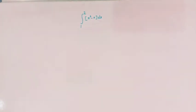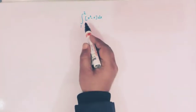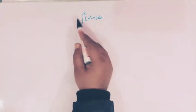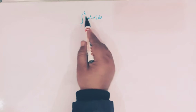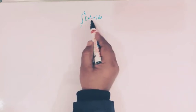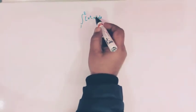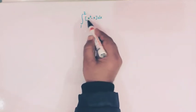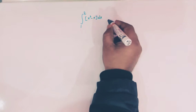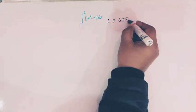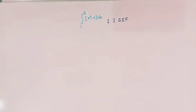Hello viewers, in today's class we are going to solve one important definite integral involving the greatest integer function. We have to calculate the value of the definite integral from 1 to 2 where the integrand is the greatest integer function of x squared minus x.